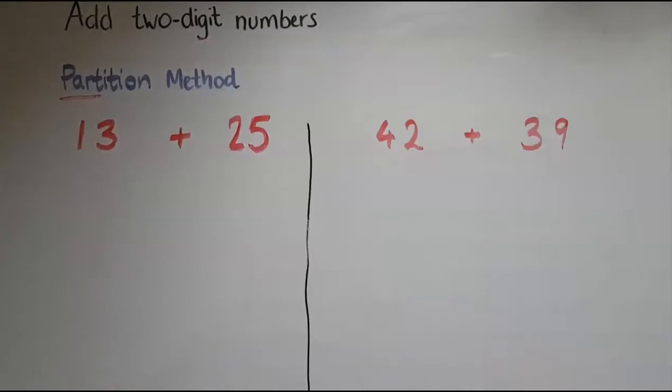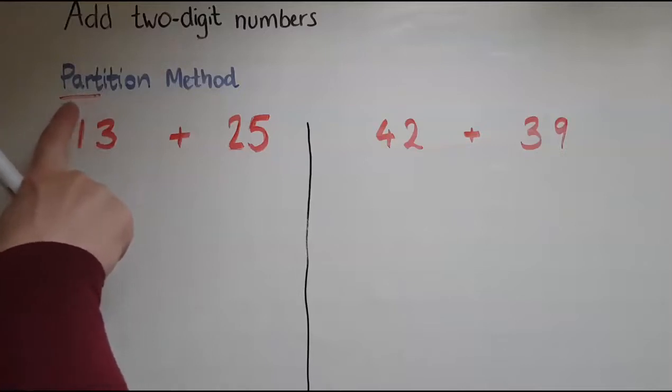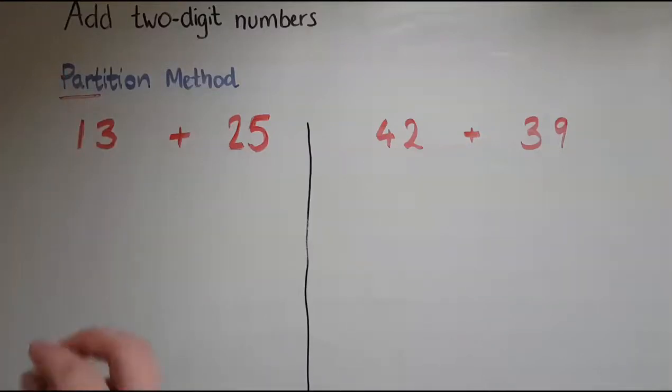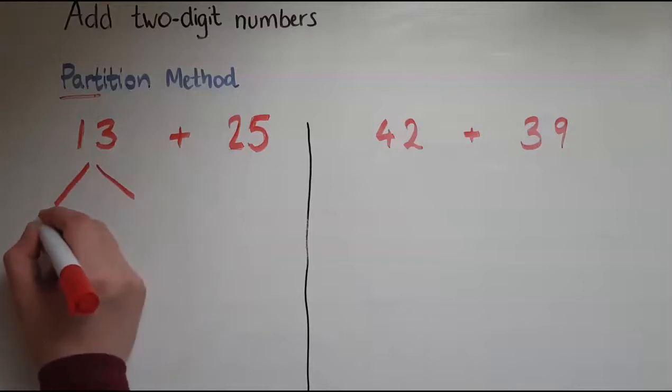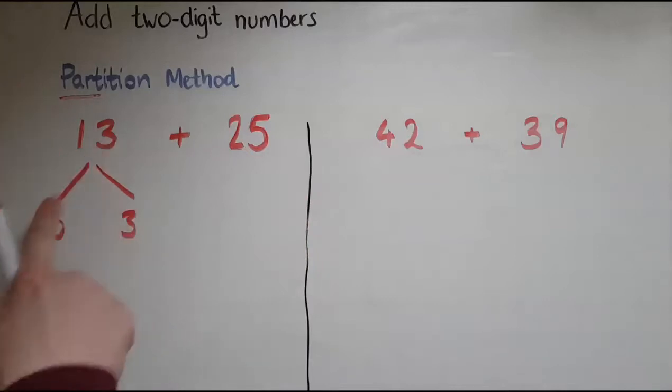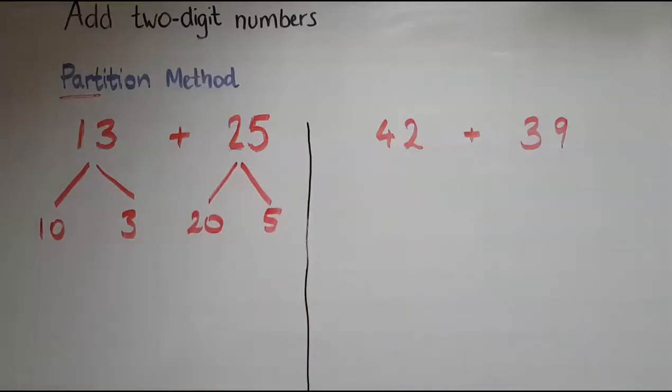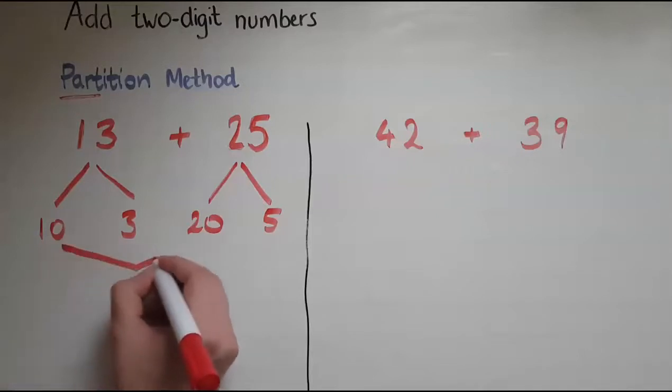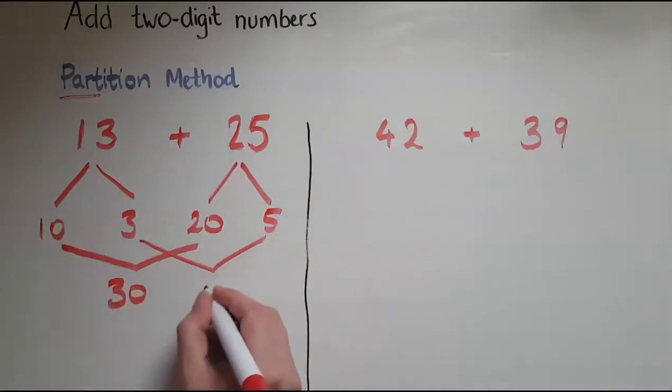In this video we'll learn to add two-digit numbers using the partition method. As the name suggests, partition is about breaking numbers down into parts, and I'll show how. So we've got here 13 and 25. 13 can be broken down into 10 and 3, so 10s and the units separated. 25 is broken down into 20 and 5. Now it's easy for me to add the 10s together. So we've got 10 and 20 makes 30. 3 and 5 makes 8. So 30 and 8 makes 38.